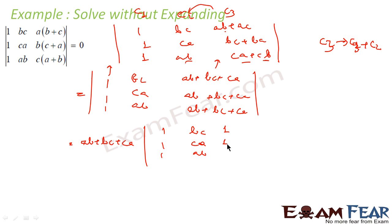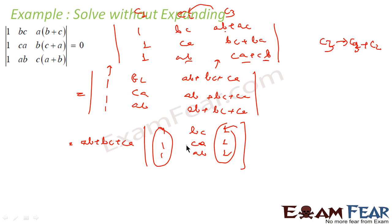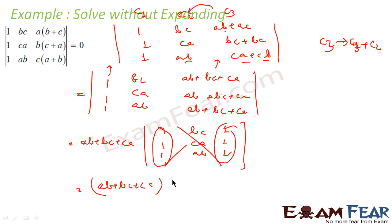Now columns 1 and 3 are identical — both are 1, 1, 1. Since they are identical, the determinant becomes 0. So the result is (ab + bc + ca) × 0 = 0. That is the answer.